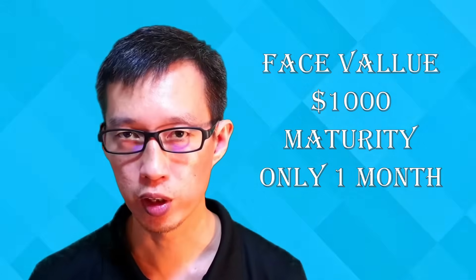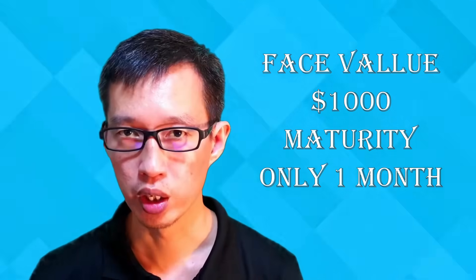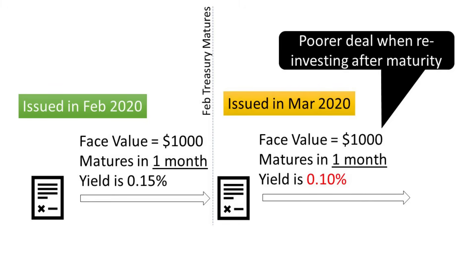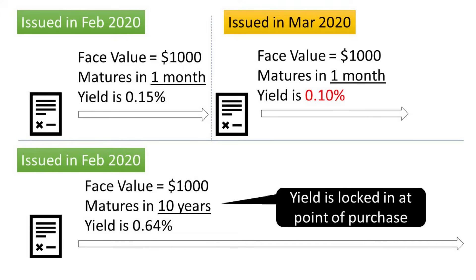Consider switching between different maturities. Say you have a 1-month treasury bill maturing soon. When you reinvest that money, you'd have to buy a new bill — but knowing the Federal Reserve has lowered interest rates, you would be getting less yield. So you might choose to lock in a higher yield for a longer period of time by switching to a longer maturity bond rather than reinvesting in shorter maturities at a poorer rate.